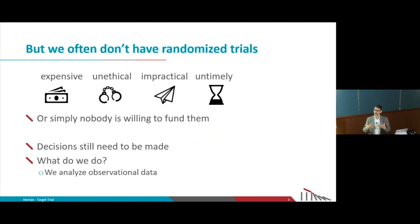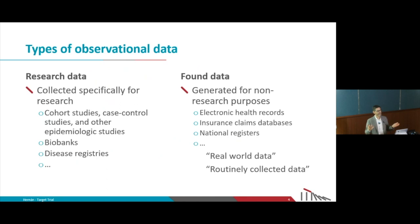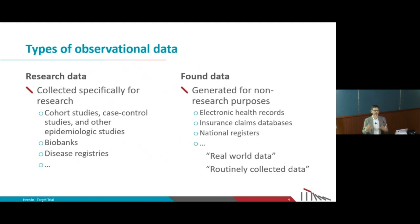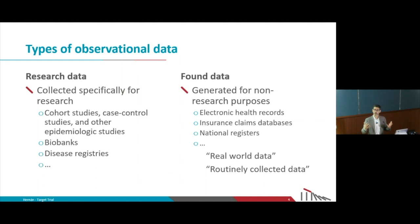Observational data is data not coming from trials. There are many different types: some observational datasets are generated specifically for research, like large cohorts such as the Framingham cohort study or the Nurses' Health Study. Then there are other sources not generated for research — think of electronic medical records or insurance claims — large healthcare databases with millions of people and thousands of variables, generated for clinical management or administrative purposes that we repurpose for research. That is now known as real world data.